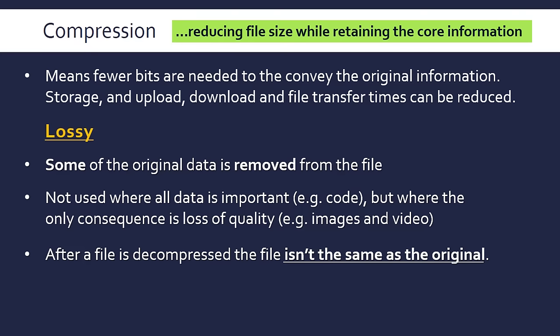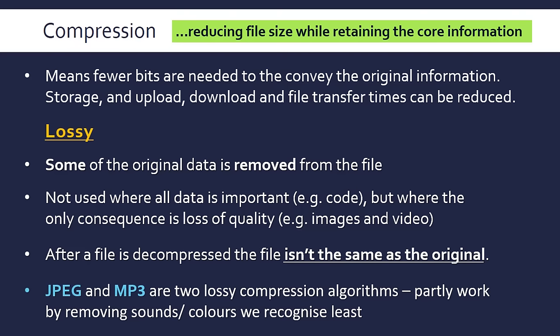Two examples of lossy algorithms are JPEG for images and MP3 for audio. They're quite complicated in terms of their operation. But one of the things they can do is remove background noise, pitches outside our human range, or colors we least recognize—basically removing data that, as humans, we're least likely to notice as gone.